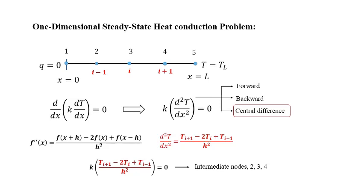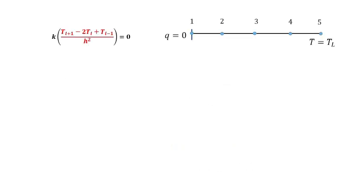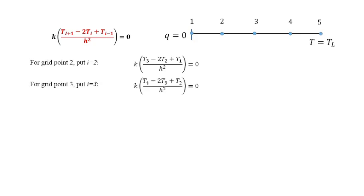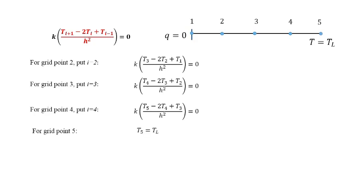Writing the finite difference approximation for each intermediate node: for node 2 (i=2): k·(T3 − 2·T2 + T1) / h² = 0; for node 3 (i=3): k·(T4 − 2·T3 + T2) / h² = 0; for node 4 (i=4): k·(T5 − 2·T4 + T3) / h² = 0. The right boundary condition gives T5 = TL.